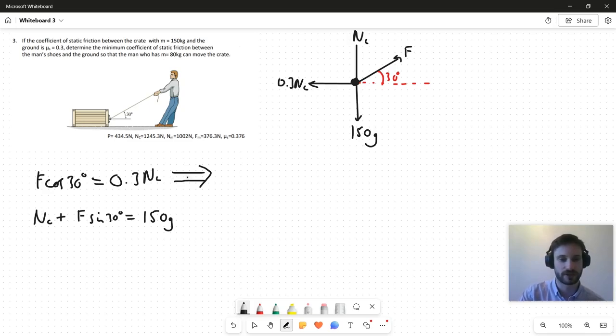So divide by 0.3, that leaves me with F cos 30 over 0.3 equals Nc. I'm going to take that and I'm going to substitute into this second equation here. I'm going to substitute that in for Nc.